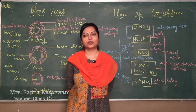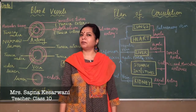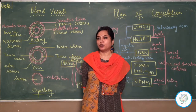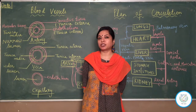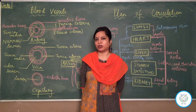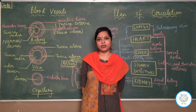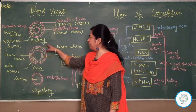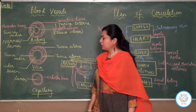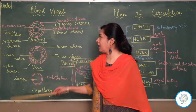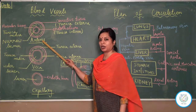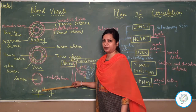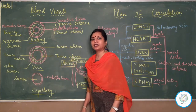Good morning children. Today we will talk about the three main kinds of blood vessels and the major blood vessels which supply blood to different organs of the body, and the ones which collect deoxygenated blood from those organs. To begin with, we will talk about three main kinds of blood vessels. As you can see, I have drawn their cross section here. The first kind of blood vessel is the artery, second is vein, and third are the capillaries.